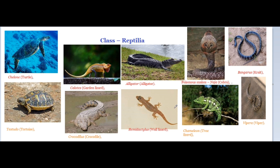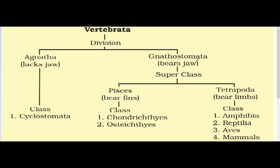Good morning. Today let us study Class Reptilia. As we know, vertebrata is divided into Agnatha and Gnathostomata. Gnathostomata has superclasses Pisces and Tetrapoda. Tetrapoda has four classes: Class Amphibia, Class Reptilia, Class Aves, and Class Mammalia. We already discussed Class Amphibia; now let us discuss Class Reptilia.